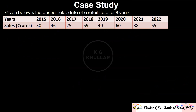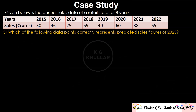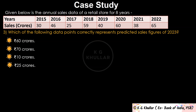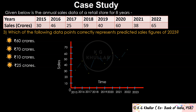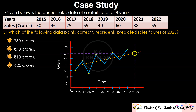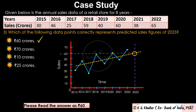The last question of the case study is: which of the following data points correctly shows the predicted sales figures for 2023? In practical scenarios, sales for 2023 can be anything — if there is a lockdown, sales can be much lower. But while solving a time series question, we select the option most close to our trend line, because that will be as per our expected trend. Among all the options, 50 is most close to the trend line, so the correct answer is option A. You don't even need to do any calculation to solve this case study — if you know the concept, it's a cakewalk.